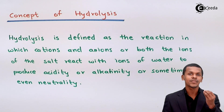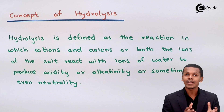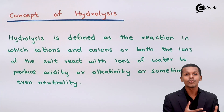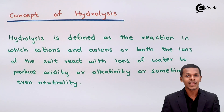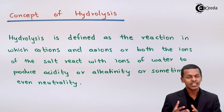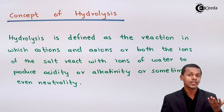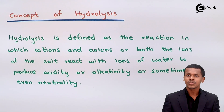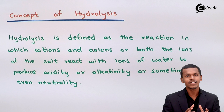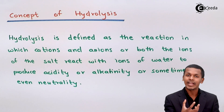Suppose the cation or anion of the salt don't react with the H⁺ ions or OH⁻ ions of the water. In that case, because there is no reaction of the H⁺ ion or OH⁻ ion with the salt species — that is, the cation and anion — the concentration of H⁺ and OH⁻ ions will remain the same, and that's the reason neutrality will be maintained.